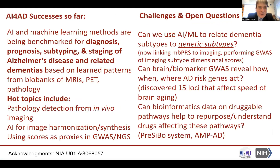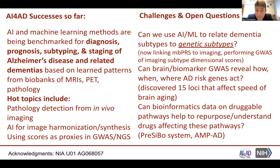A handful of successes so far from the AI for AD project, now two years in: first, benchmarking AI and machine learning methods for a variety of AD-relevant tasks—diagnosis, prognosis, subtyping, and staging—based on learned patterns from biobanks of MRIs, PET, and even neuropathology. Hot topics include detecting pathology from in vivo imaging, and a very powerful use of AI for image harmonization—making scans from different sites comparable—and synthesis, such as the remarkable example of synthesizing amyloid PET scans from multimodal MRI.